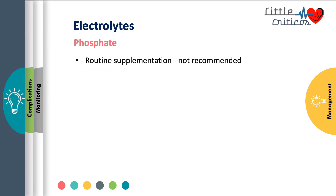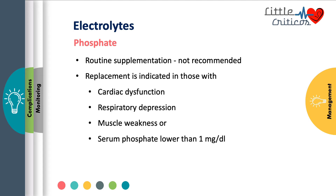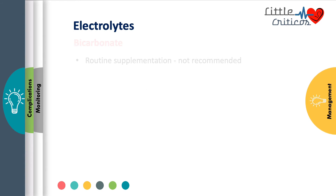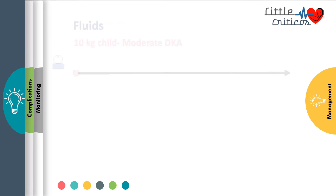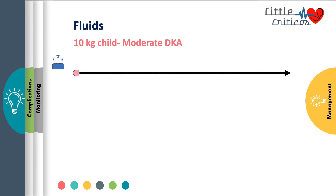Hypophosphatemia is another common abnormality in these children, but routine supplementation of phosphate is not recommended unless the child has cardiac dysfunction, respiratory depression, muscle weakness during recovery, or serum phosphate lower than 1 mg per deciliter. Potassium phosphate and potassium acetate are commonly used as phosphate supplements. Bicarbonate is not routinely recommended in treating diabetic ketoacidosis. The exception is severe acidosis with myocardial dysfunction or life-threatening hyperkalemia, where a single dose of bicarbonate may be used.